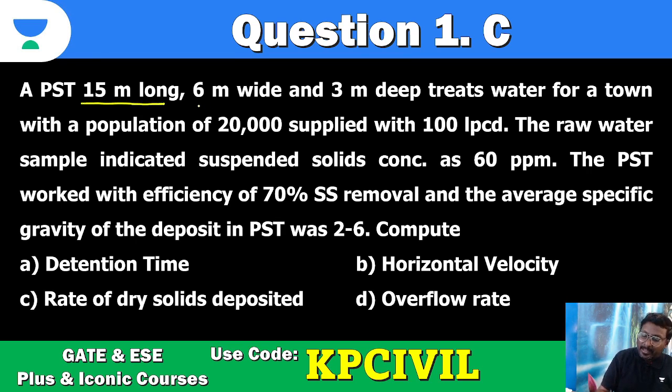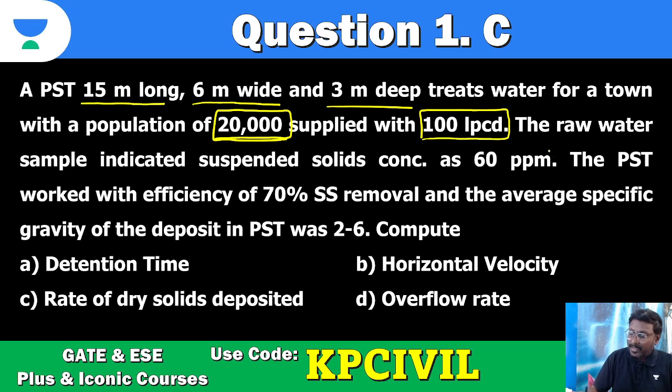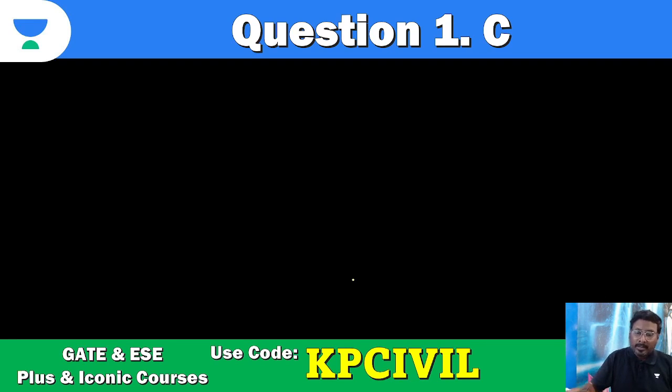Primary sedimentation tank, 15 meter long, 6 meter wide, 3 meter deep, treats water for a town with a population of 20,000 supplied 100 liter per capita per day. Raw water sample indicated suspended solids concentration as 60 ppm. PST worked with an efficiency 70% suspended solids removal and average specific gravity of the deposit in PST is 2.6. Compute detention time, horizontal velocity, rate of dry solids deposited, overflow rate.